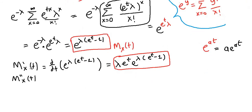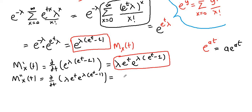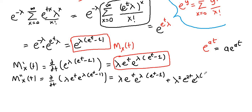Now we can take the second derivative, which is the derivative of the first derivative. Using differentiation rules for e, we obtain lambda e to the t times e to the lambda times e to the t minus 1, plus lambda squared times e to the 2t times e to the lambda times e to the t minus 1. This is the second derivative of the moment generating function.